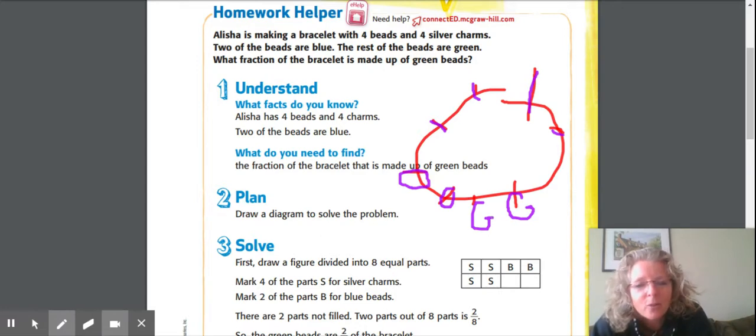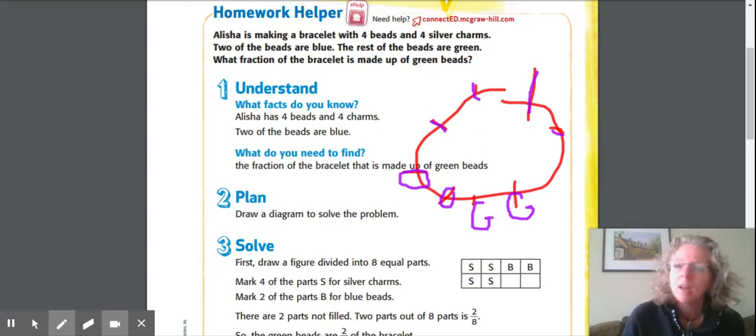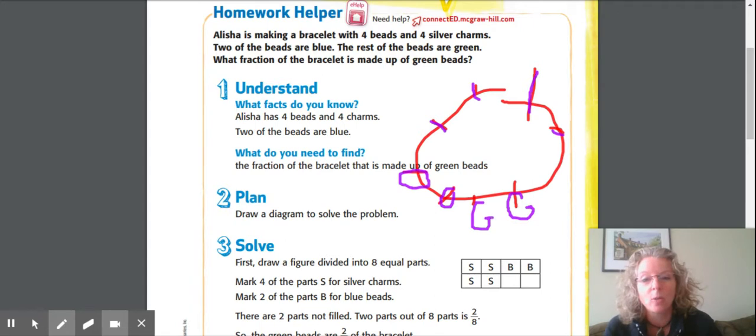Then they want to know what fraction of the whole bracelet is made up of green beads. So they walk us through this slowly. I like to go sentence by sentence and then I draw a picture for each sentence, but they want you to read the whole thing and then think about what you know, make a plan, then solve it. Whichever way works for you, that's how I'm happy to have you do it.